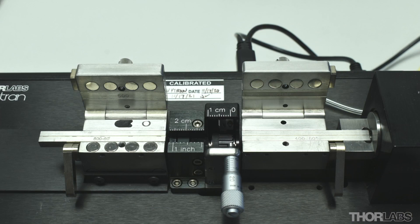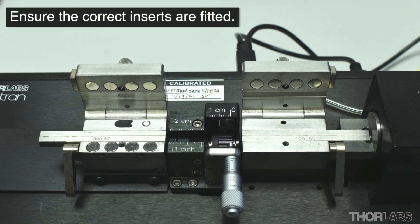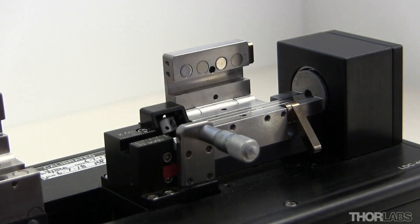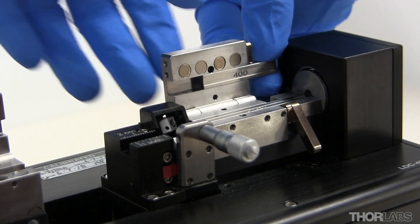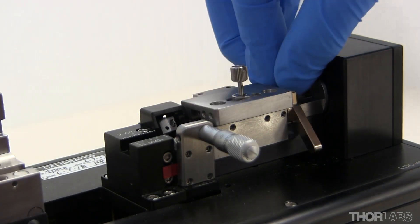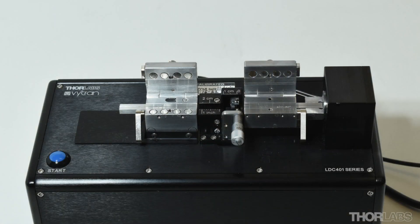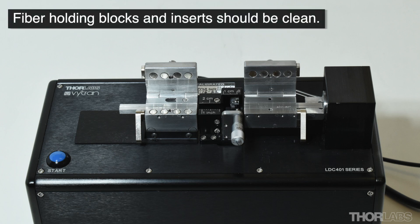If the cleave performance becomes sub-optimal, first ensure that the inserts loaded into the left and right fiber holding blocks are appropriate for the dimensions of the fiber being cleaved. If you have not already watched the video about installing cleaver inserts, click on the annotation to view this first. Now ensure that both the left and right fiber holding blocks and inserts are clean and free from debris. Clean if required.